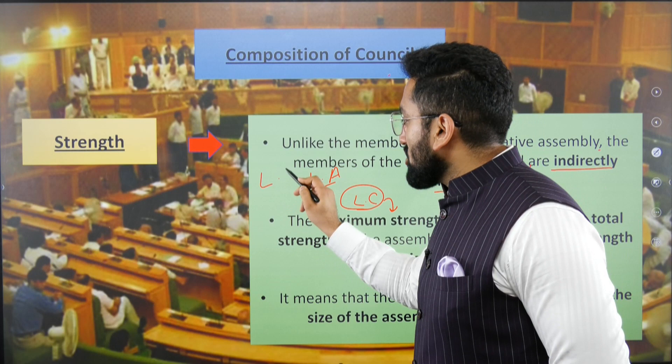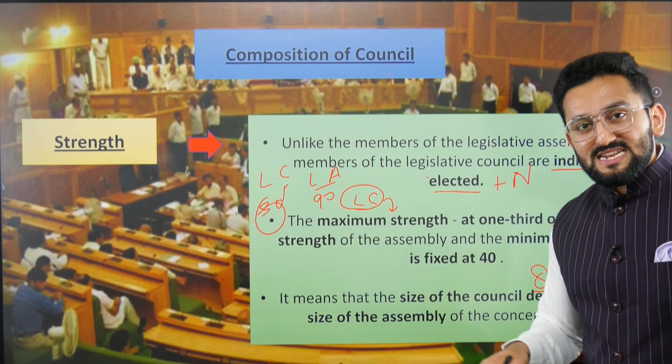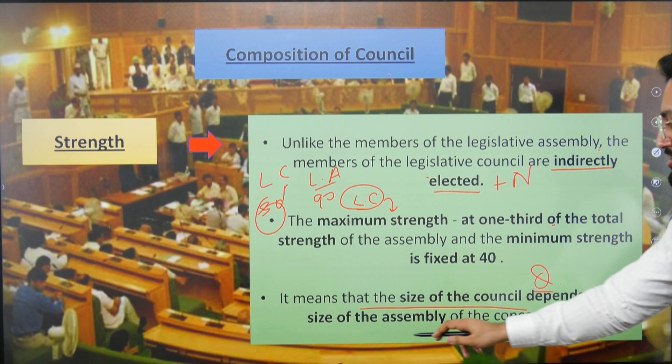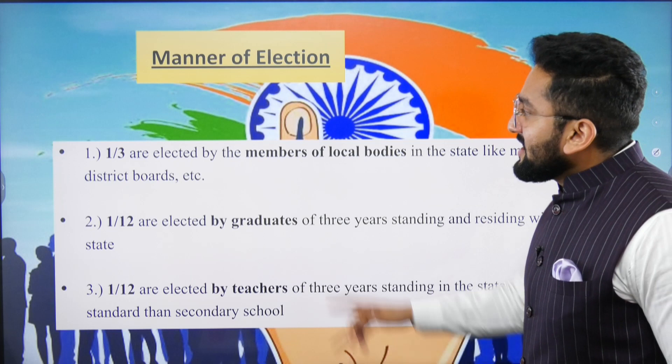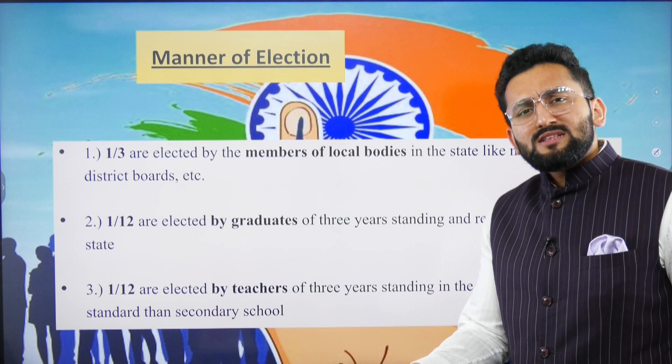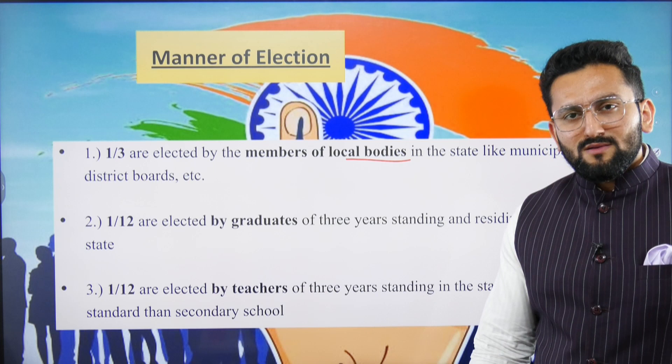So the size of the legislative council depends on the size of the legislative assembly — the one-third logic. As for the manner of election in the legislative council: one-third of members are elected by members of local bodies (panchayats, municipalities, municipal corporations), one-twelfth are elected by graduates registered in the electoral rolls of that state for legislative council elections.